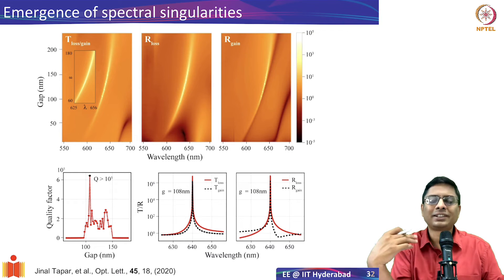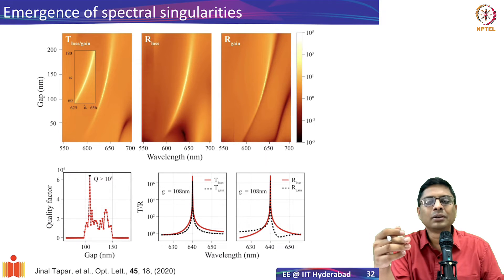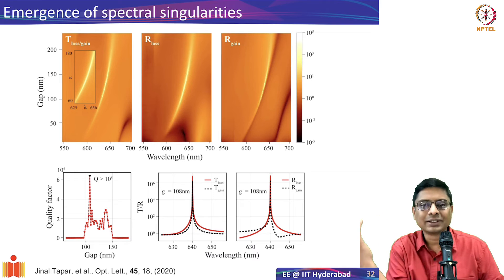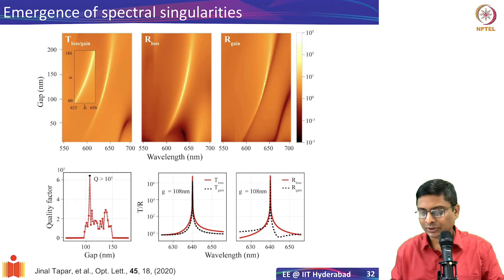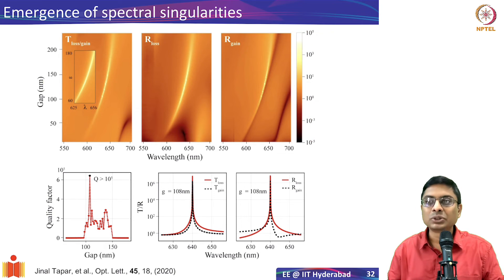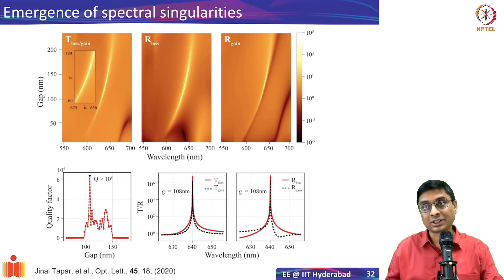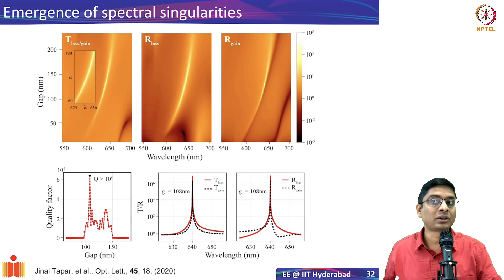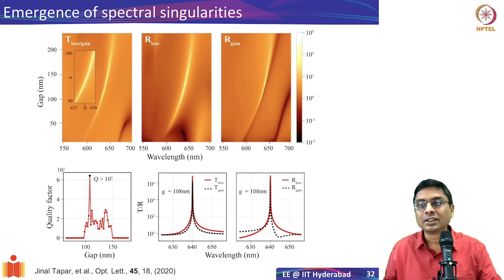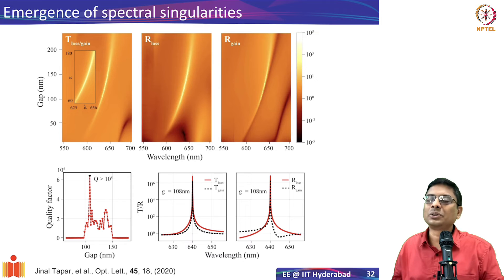For a structure like this, we calculated the reflection and transmission coefficients and found interesting properties called spectral singularities. We varied parameters and calculated transmission and reflection over a wavelength range as a function of the gap. At a particular wavelength and a particular gap, you get very large transmission — on a logarithmic color scale the white regions indicate very large values. The Q-factor of the emission line is more than 10^5, compared to the experimental value of about 2750 mentioned earlier.